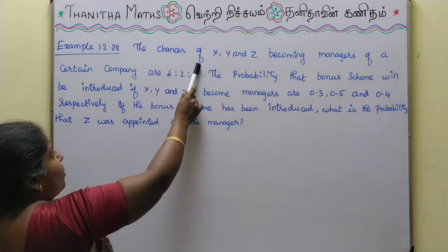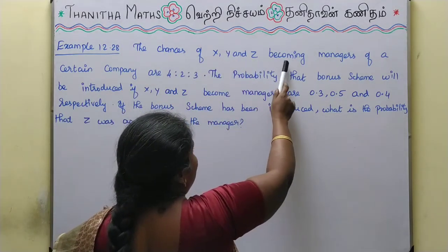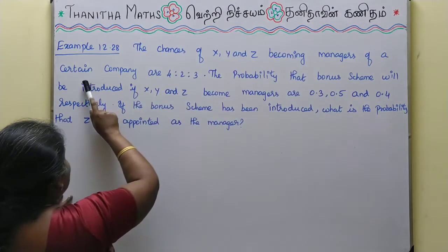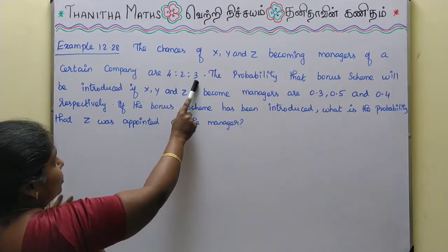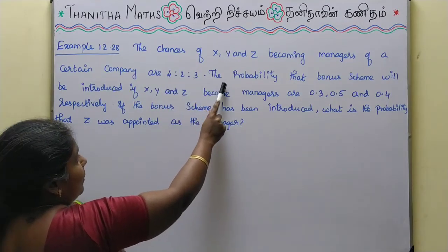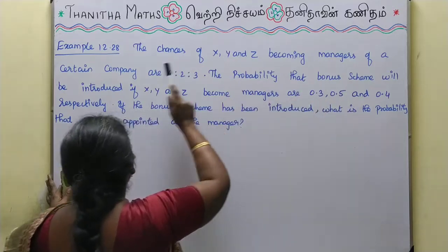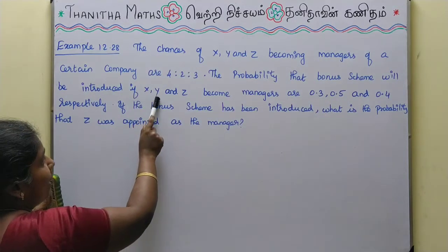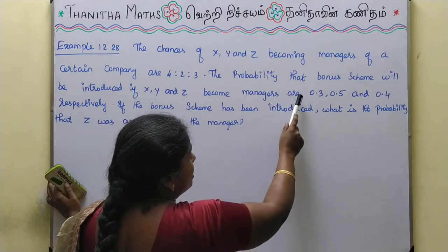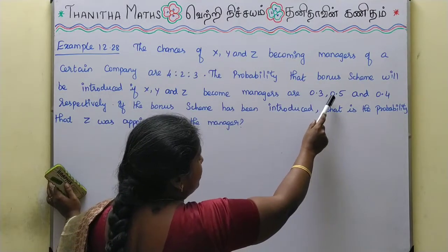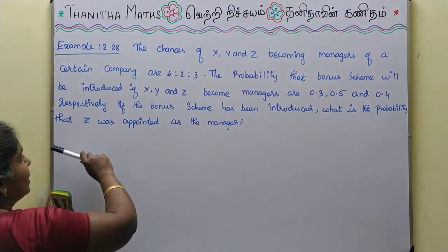The chances of X, Y and Z becoming managers of a certain company are 4:2:3. The probability that a bonus scheme will be introduced if X, Y and Z become managers are 0.3, 0.5 and 0.4 respectively.